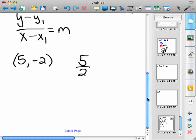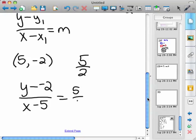Yep, just making sure that's right. And so we'll just substitute these in and cross multiply. So (y - (-2))/(x - 5) = 5/2.